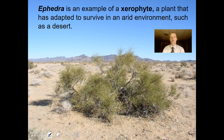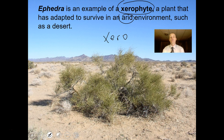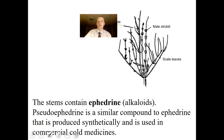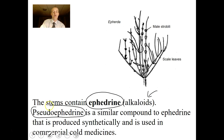Ephedra is highly adapted to its very dry habitat. It produces an alkaloid poison called ephedrine, probably to dissuade herbivores from feeding on it. You may have taken pseudoephedrine for allergies — this is a similar compound to ephedrine, although produced synthetically, used in commercial cold medicines to unblock mucus production.